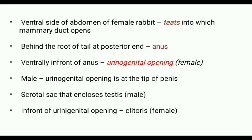The anus is located at the posterior end, just behind the root of the tail. Ventrally, in front of the anus, there is a urinogenital opening in female. In male, this urinogenital opening is at the tip of the penis, and the testis is enclosed in a scrotal sac. In female, just in front of the urinogenital opening, there is a structure called clitoris, which is a homologue of the penis.